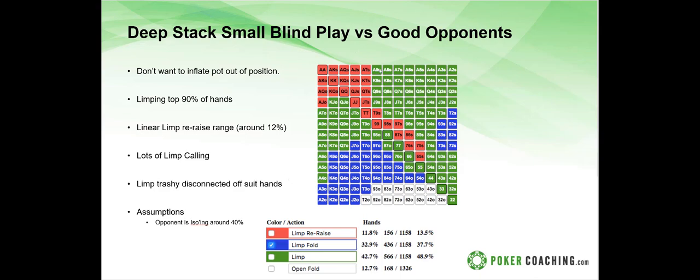The green limp-calling hands include offsuit aces, suited aces, smaller pocket pairs, and suited kings. The only hands we fold are the junkier offsuit high-low hands like king-five or queen-four. This strategy assumes the big blind is iso-raising around 40 percent of the time — and most players are not doing that. So this is the baseline against a good opponent.